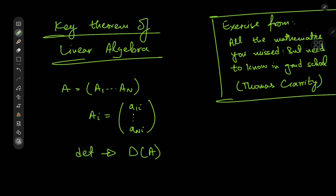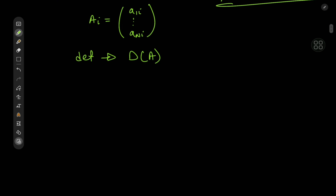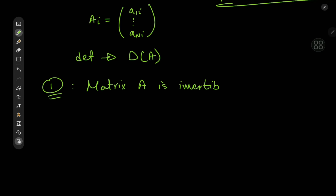How exactly should we begin? We'll start off with the first two statements: statement one is that the matrix A is invertible, and statement two is that the determinant of A is non-zero.